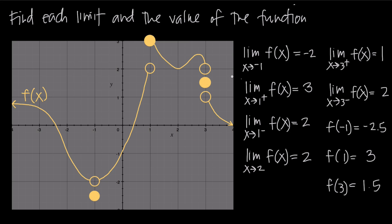So even though graphs like this are a little crazy and a little weird, they do illustrate the definition of the limit and how to find the value of the function at various points, despite the value of the limit at those same points. That's how you use crazy graphs to find the value of the limit and the value of the function.